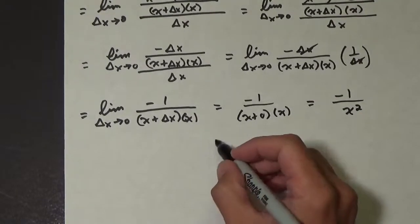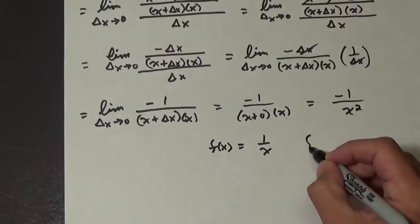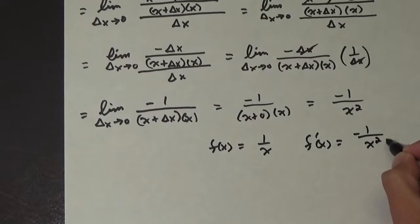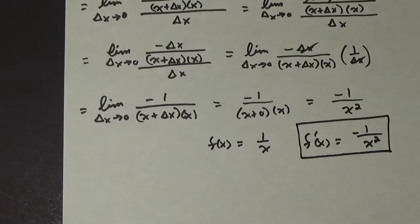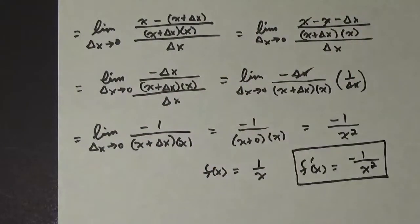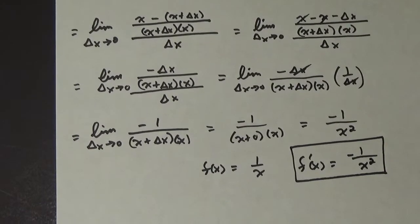So now we've found another derivative. If f of x equals 1 over x, then f prime of x equals negative 1 over x squared — and there is the answer. We used the definition of a derivative, combined fractions, reduced it down, and got the derivative as negative 1 over x squared.